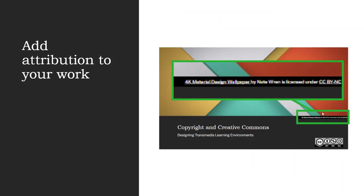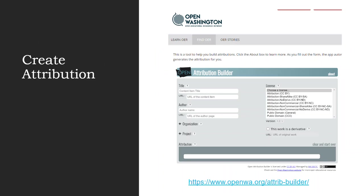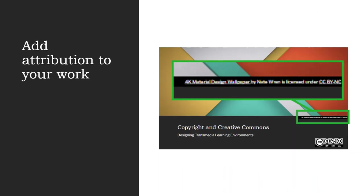To create the attribution, you can use something like the Open Washington Attribution Builder at openwa.org/attrib-builder. You just put in the title, links, and whatever information you have, and it will create the attribution you can copy and paste into your work. The attribution includes the name and title, the creator, and what it's licensed under. In some cases, like on Wikimedia Commons, it will actually create the attribution for you directly. But if not, that Open Washington site is really nice to use. Then you just add that attribution to your work — and that's it for using someone else's content.